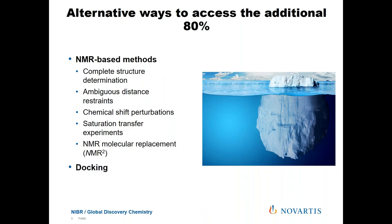This leaves a problem: roughly 80% of fragments identified to interact with a target cannot be structurally characterized. So we start looking at other NMR-based methods — complete structure determination takes time and is labor-intensive, and there are methods using ambiguous distance restraints or chemical shift perturbations, and newer methods like NMR molecular replacement. The technique I decided to focus on and develop was to use HADDOCK to generate docking models, and that is what I'd like to talk about today.